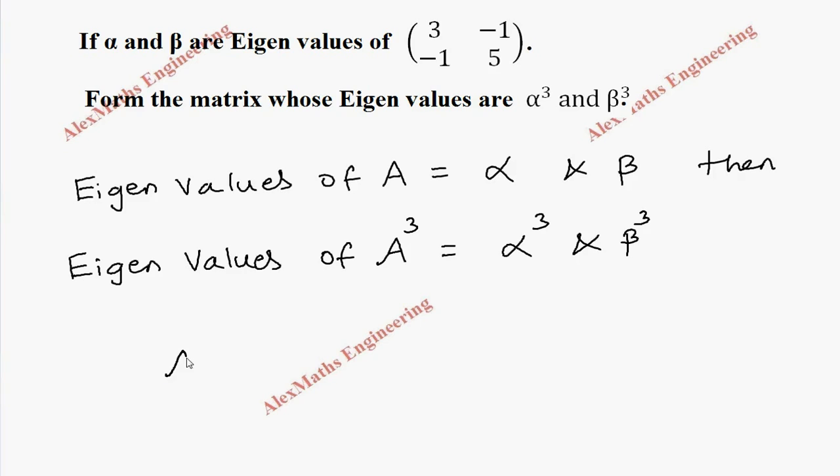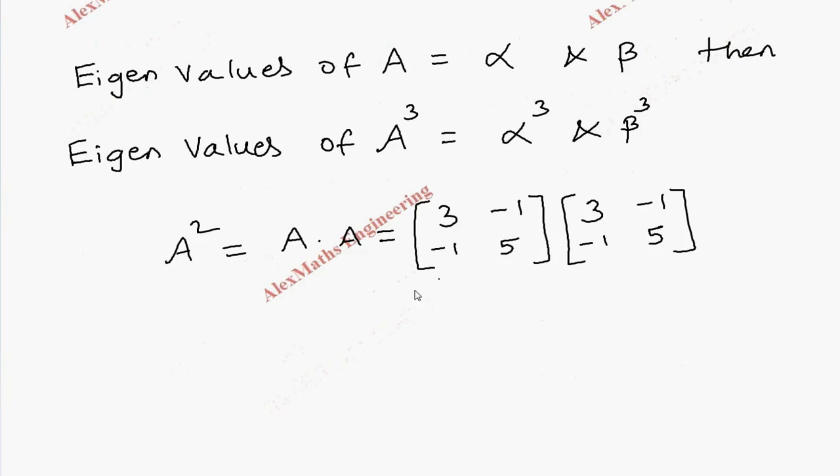So now let's find A square which is A into A. The eigenvalues are alpha and beta for this. Let's copy the matrix: 3, minus 1, minus 1, 5 into again 3, minus 1, minus 1, 5. We are going to multiply both the matrix A.